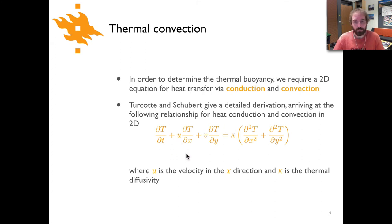The end result looks probably quite familiar. We have a dT/dt term, so there's a transient temperature change with time, plus now we have u·dT/dx, the temperature change along the x-axis with the horizontal velocity, plus the vertical velocity times the change in temperature in the y direction dT/dy, equals κ times the second derivative of temperature with respect to x and with respect to y.